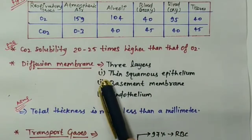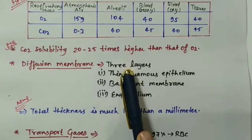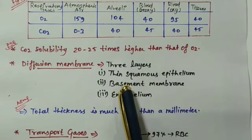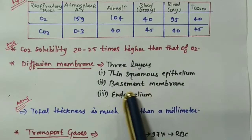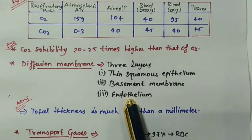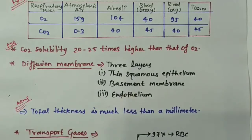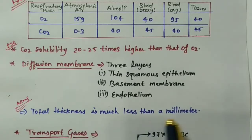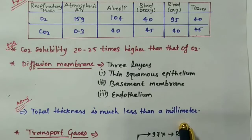Now let's look at the diffusion membrane. The diffusion membrane is divided into three layers. The first one is the thin squamous epithelium. The second one is the basement membrane. And the third one is the endothelium. The total thickness is less than 1 mm.